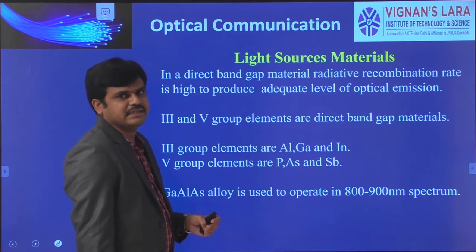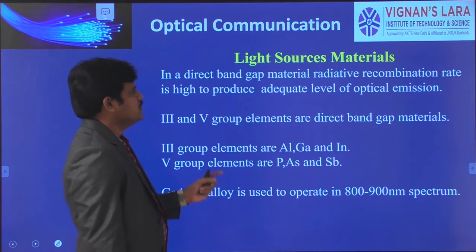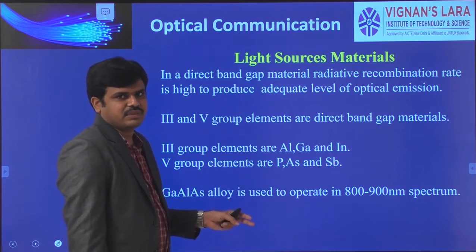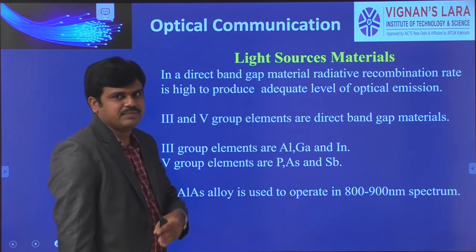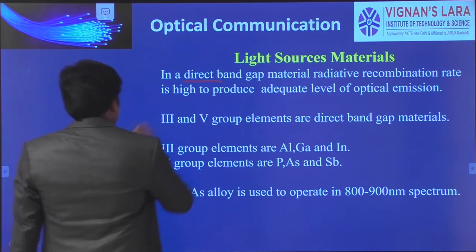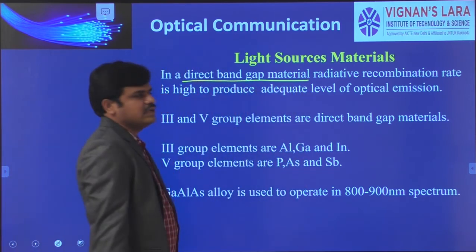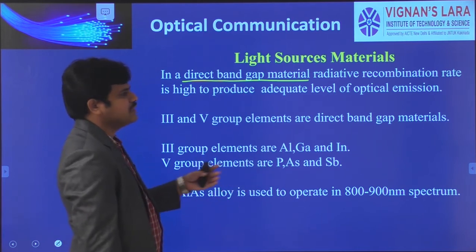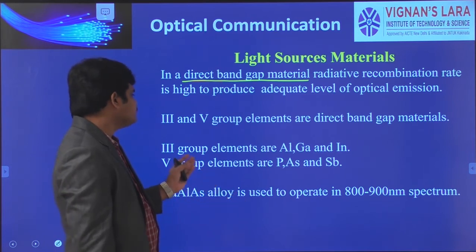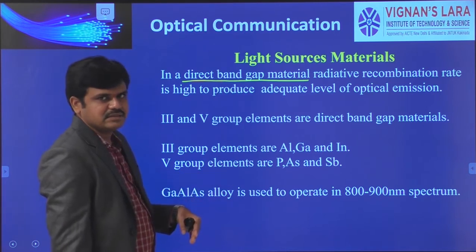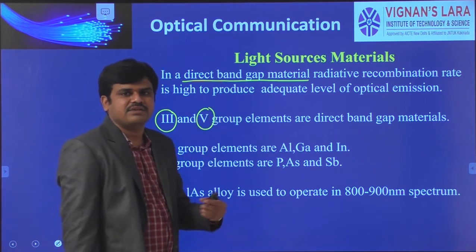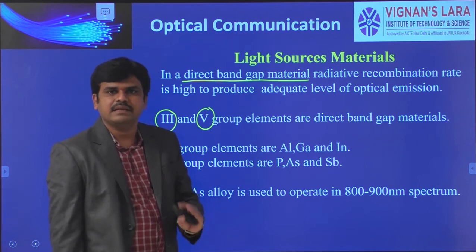Let us see what are the various light source materials. We already studied about two types of semiconductor materials used as optical sources: direct band gap semiconductor materials and indirect band gap semiconductor materials. Out of these, direct band gap semiconductor materials have more radiative property and more recombination rate compared to indirect band gap. So direct band gap materials from the third and fifth group of elements are generally preferred in manufacturing surface emitting or edge emitting LEDs.